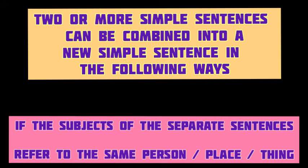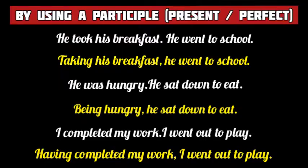In today's video, I am going to explain how we can combine two or more simple sentences into a new simple sentence. In the first segment, we have the synthesis of simple sentences whose subjects refer to the same person, place or thing. We may join two or more simple sentences by using a present or perfect participle. For example, 'he took his breakfast' and 'he went to school' are the two separate simple sentences. The first simple sentence is changed into a participle phrase because it has the initial action 'took.' Taking his breakfast, he went to school — the present participle 'taking' has come in place of 'took.'